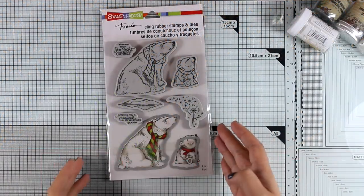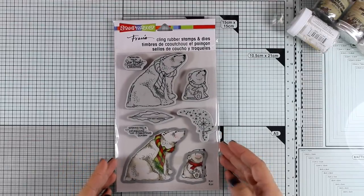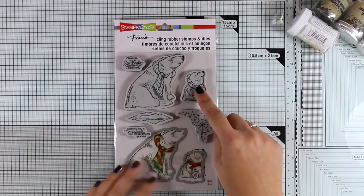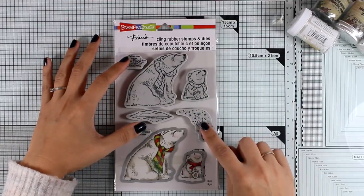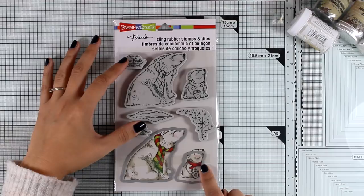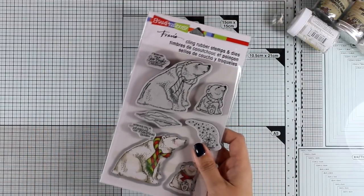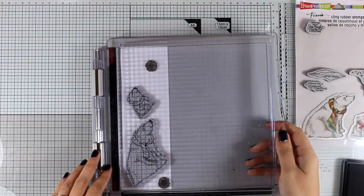Today I'll be using the Polar Bears stamp set and matching dies. They come in the same set and you get two polar bears. If you stamp them multiple times you can create a whole family. You also get two different sentiments and a bunch of stars.